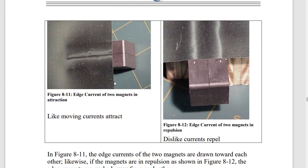The reason the currents are concentrated around the center is that like currents attract, so these edge currents all scrunch together at the center — that's where you see the brightest spot. We can show this by putting two bar magnets together: those center edge currents attract each other and get distorted. And if you put these magnets in repulsion, the edge currents are actually pushed farther away from the center line, repelling each other along the sides.